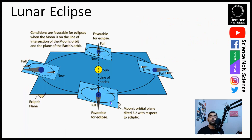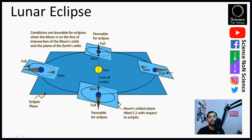Eclipses happen when one celestial object comes in between two other celestial objects. During a lunar eclipse, Earth is going to come in between the Sun and Moon. Now, moon goes around the Earth every 27 and a half days. You may be thinking: if moon goes around the Earth roughly every month, why don't we see a lunar eclipse every month? The reason is that the Sun-Earth plane and the Moon-Earth plane are relatively tilted by 5 degrees. There are only two locations during which Earth can come between Sun and Moon with all three bodies in one line — these are the nodal points where you can see an eclipse.